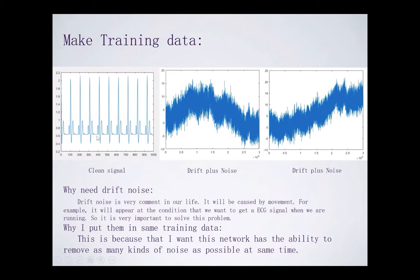Here is the clean signal we generate from the MATLAB code, and we add some white noise and drift noise. Why need the drift signal? The drift noise is very important and very common in our life. It is caused by the movement. For example, if we want to get some ECG signals when we are running, so it is very important to solve this problem.